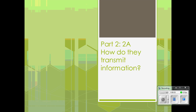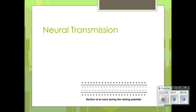Welcome back to part 2 of 2A. We are going to be looking at how neurons transmit information — basically how information is spread through neural transmission.